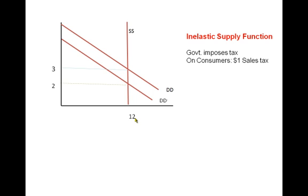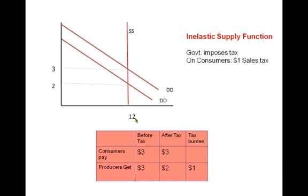Let's look at the tax burden on consumers and producers. So before tax, let's look at the second column. Before tax, consumers paid $3 and producers got $3.